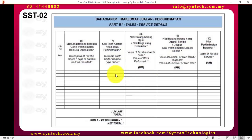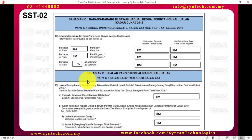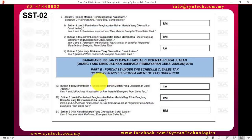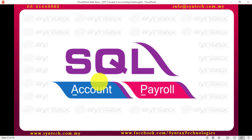Then there is the value of the item or service, and if it is for own use, what is the value? Part B2 is for sales, disposed, and own use. Part C is for the extension, and the list goes on. That's why it is very important for you to have an accounting system which is compliant with SST in Malaysia if you are an SST registrant.